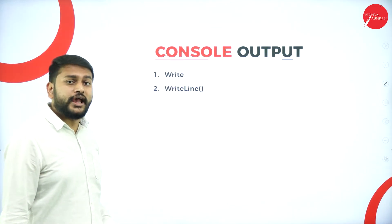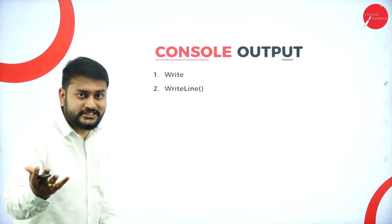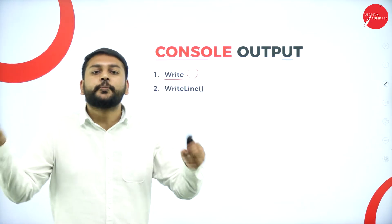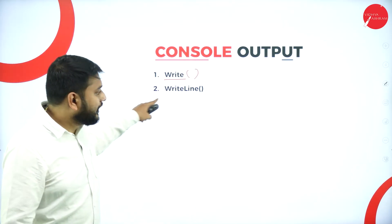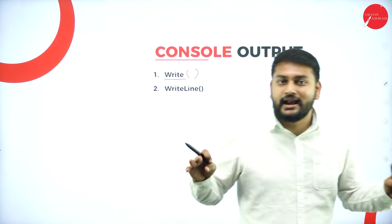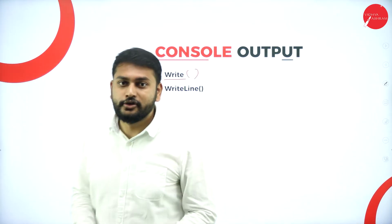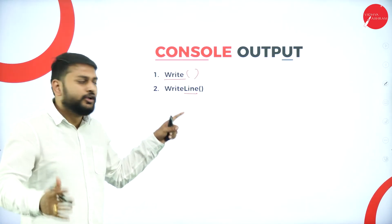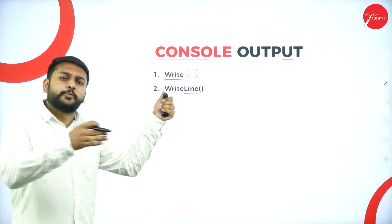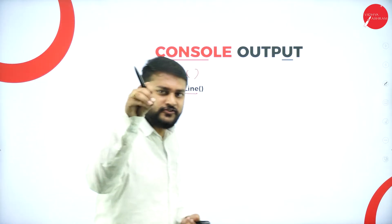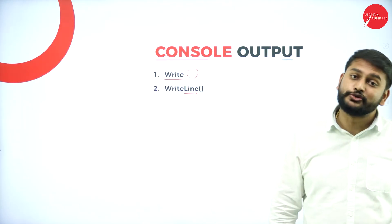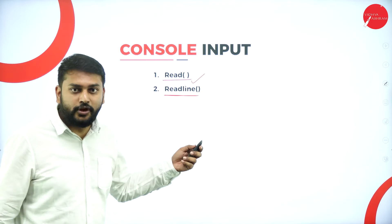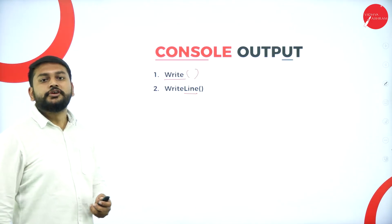The same applies to console output — I have two methods: write and writeline. When it comes to write, you use it to print a specific character. When it comes to writeline, you use it to print the entire line. The method name itself tells you what it does: if it has 'line,' it prints the entire line; if not, it is specifically for a particular character.